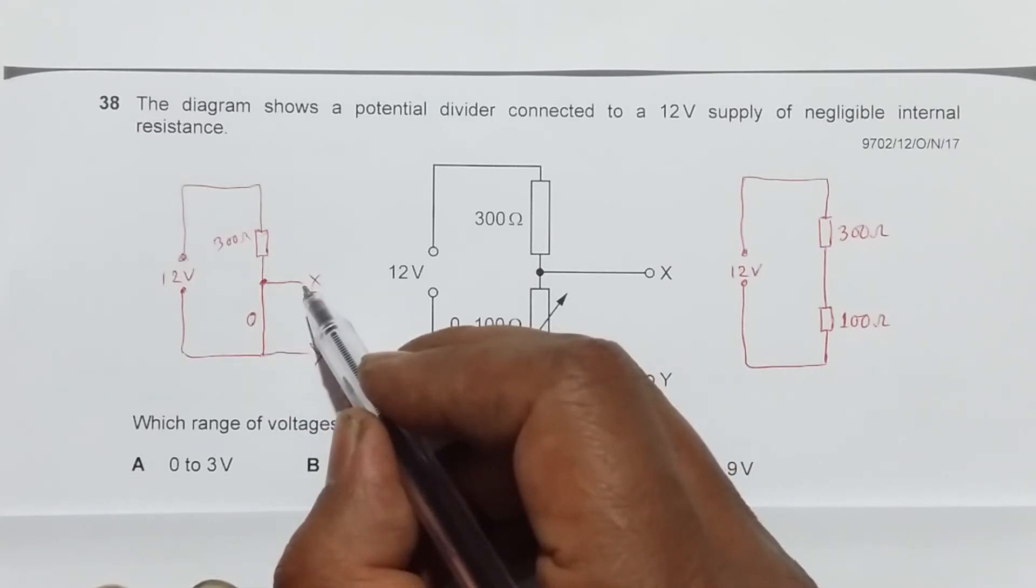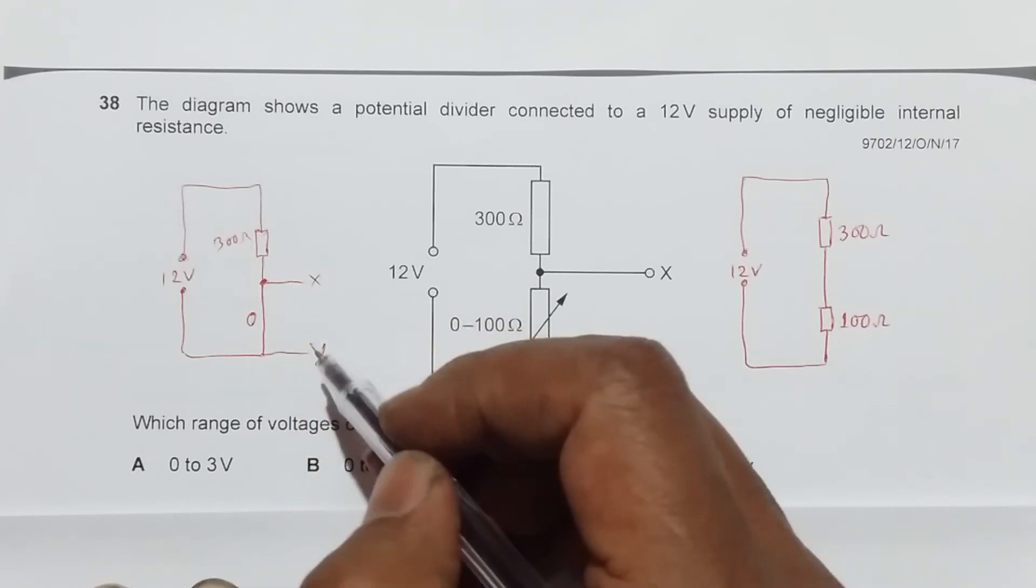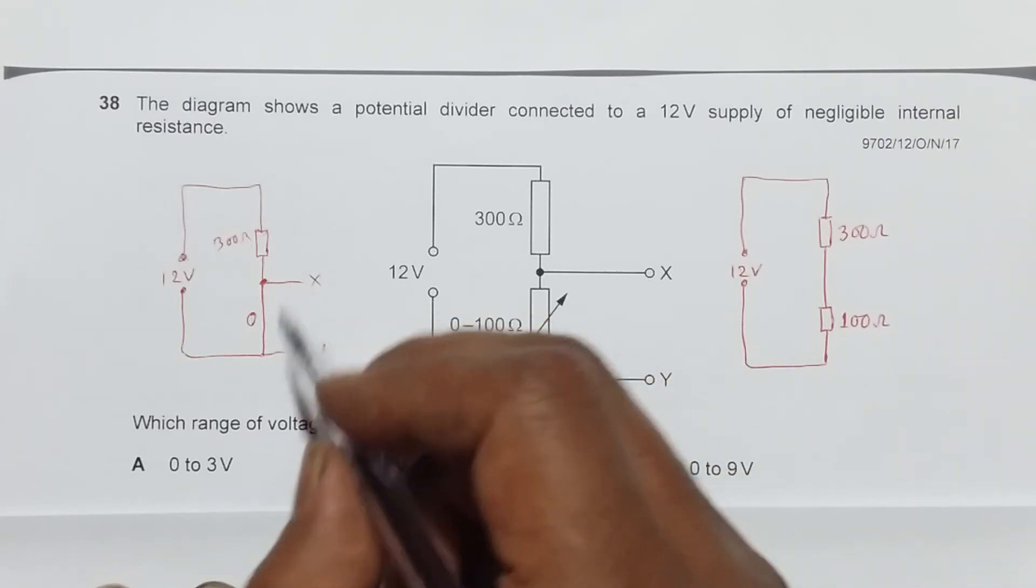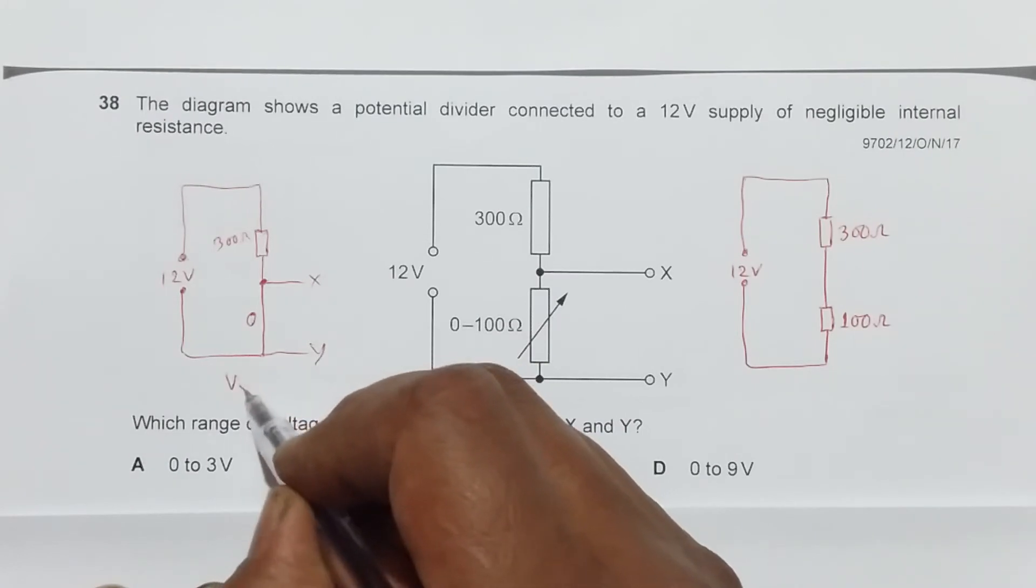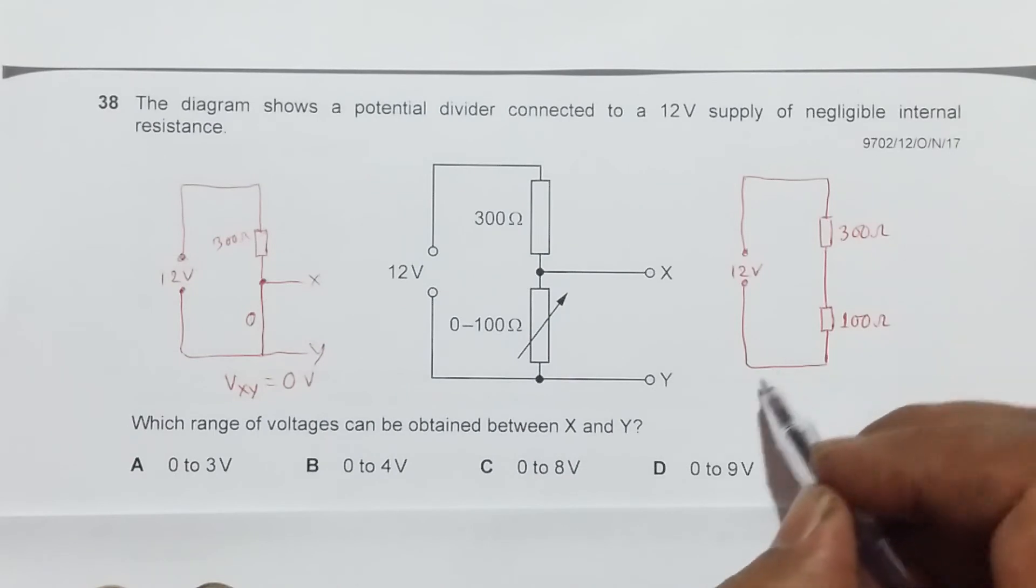Here since it is of zero ohm, the voltage here should be zero volt as well because there can't be any potential difference across a region where the resistance is zero. So the least value is zero volt, so VXY equals zero volt.